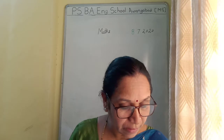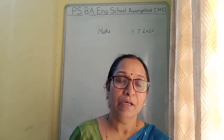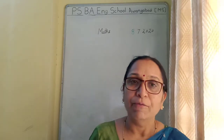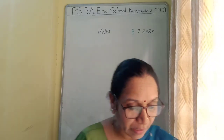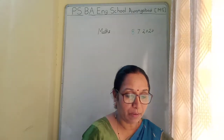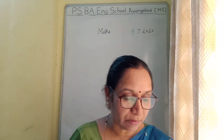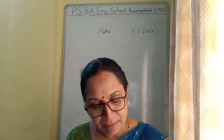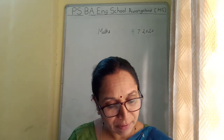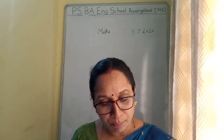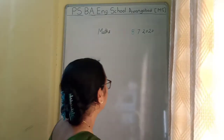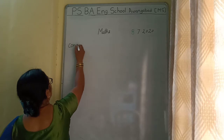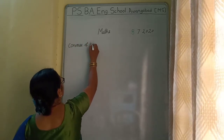Children, by mistake I did not send the video of Converse of Pythagoras theorem and example 10, which we will be doing in this video now. Here, theorem 6.9, that is the Converse of Pythagoras theorem, says that in a triangle, if the square of one side is equal to the sum of squares of the other two sides, then the angle opposite to the first side is a right angle.